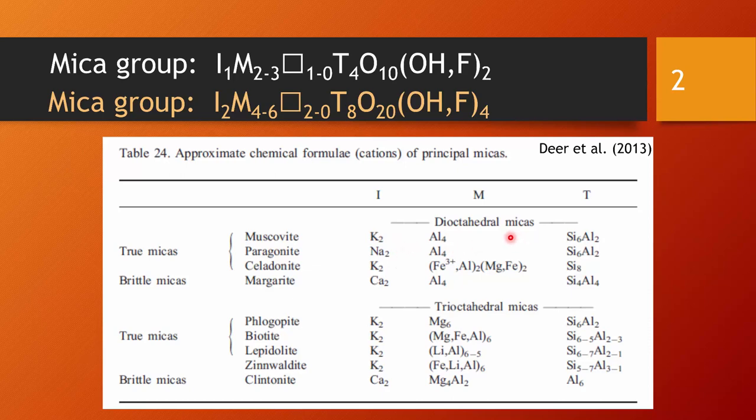On the M position, bivalent cation species like magnesium or ferrous iron is possible. If we introduce on the M position bivalent cation species, obviously we need to charge balance on the tetrahedron, and that means a loss of aluminum on the tetrahedron and more of the quadruple charged silica.